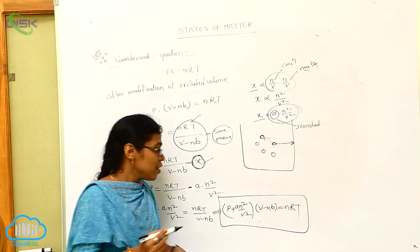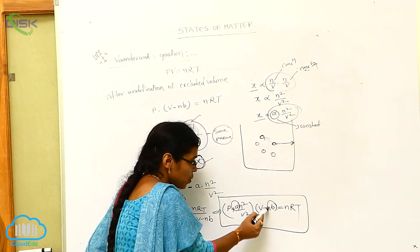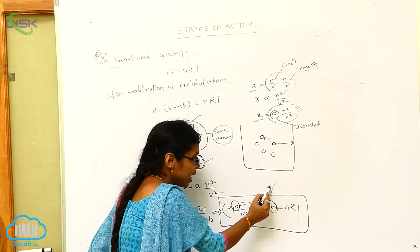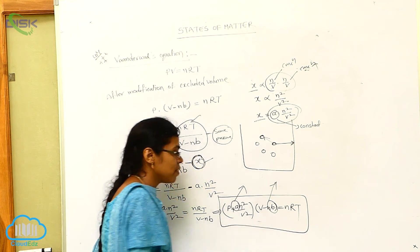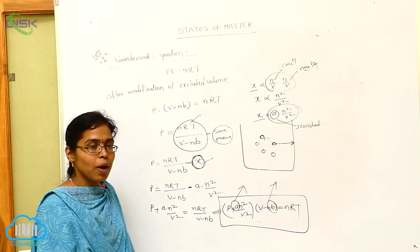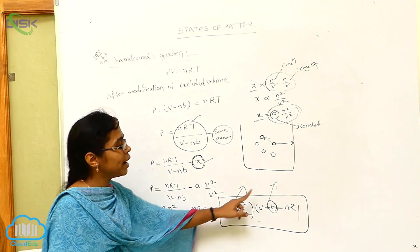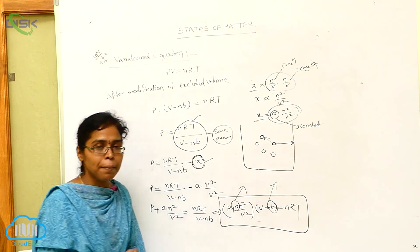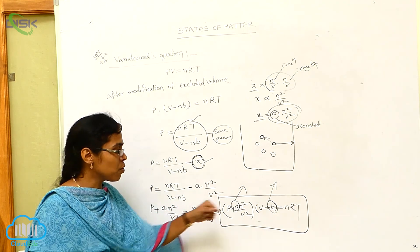In this equation we are getting two constants: B and A. Now I want to explain the units of A and the units of B.